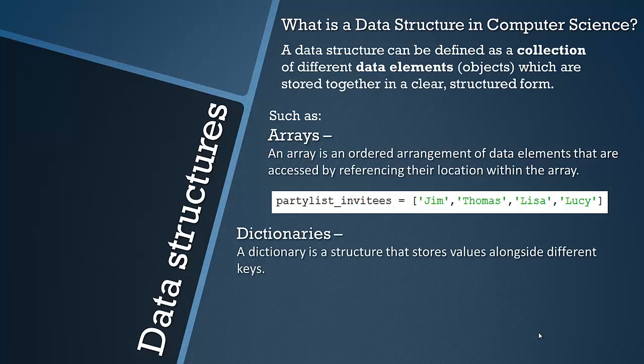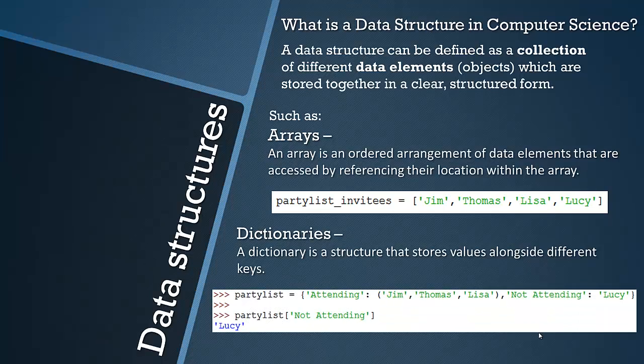Another example of a data structure is a dictionary, and these are structures that store values alongside different keys. So you can see here that instead of the names being listed like that, there's a bit more detail. The key is attending and not attending, and then the values would be the names. And then you can index this, or sort of search for it, by using the key in the square brackets. As you can see, the only person who's not attending is Lucy, therefore Lucy gets called by the program.